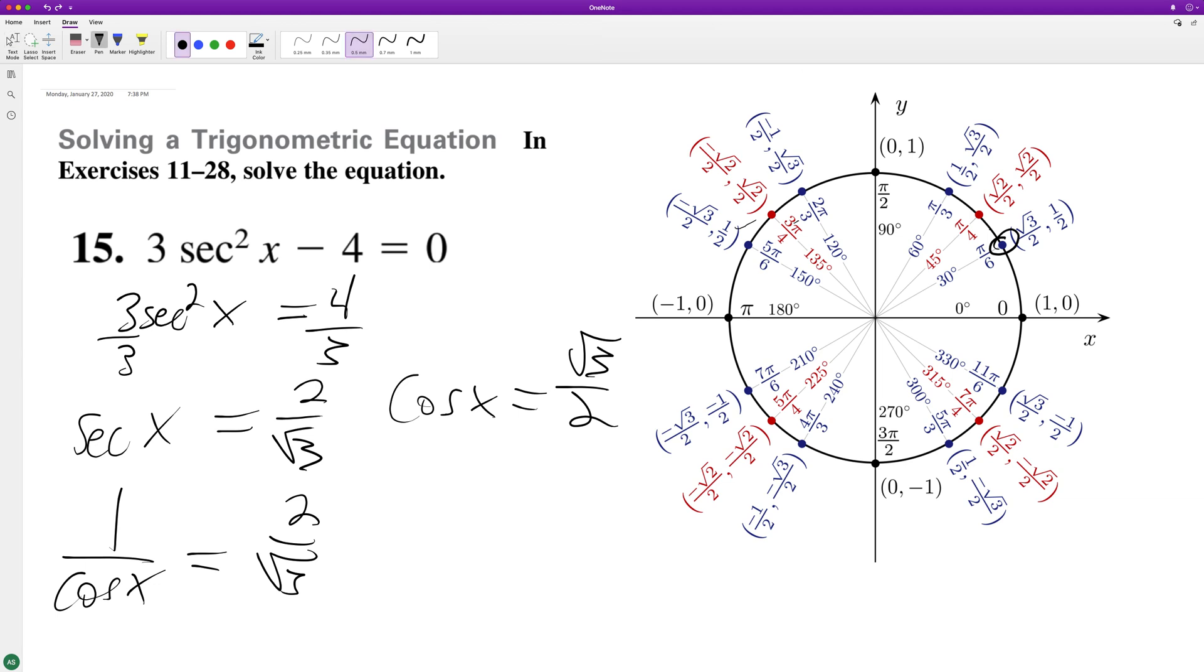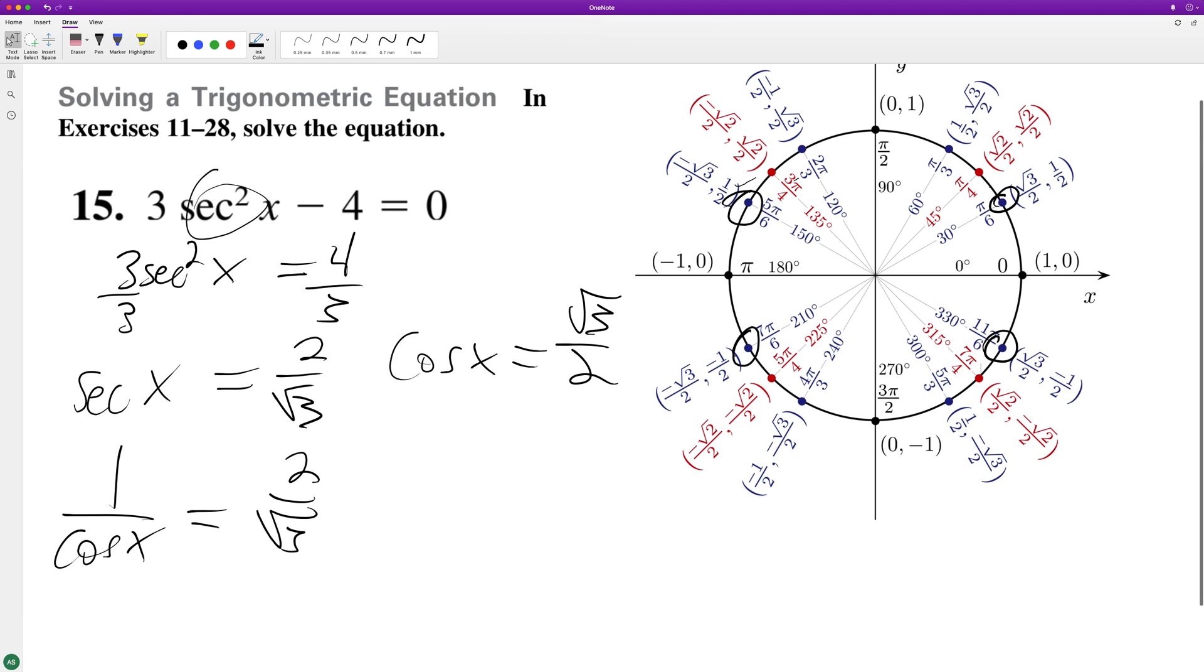And because it's squared, you can have the negative value, so 5π over 6, 7π over 6, and 11π over 6.